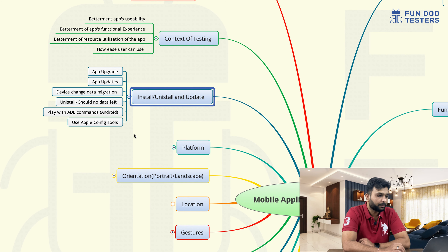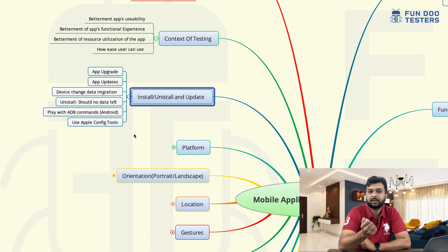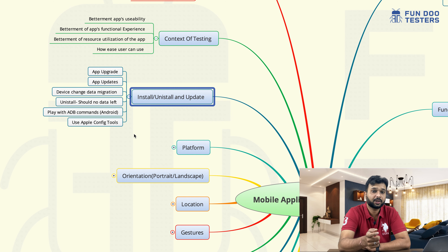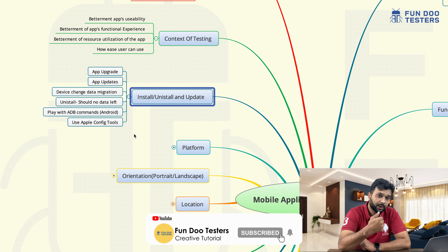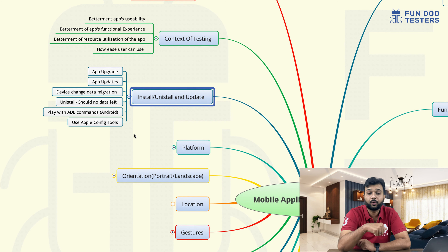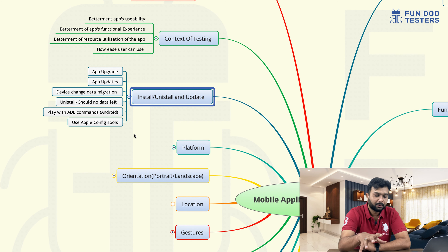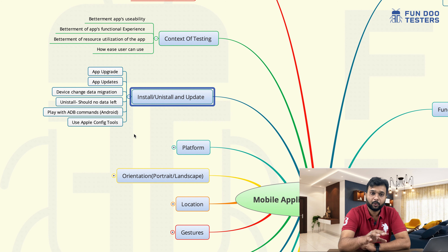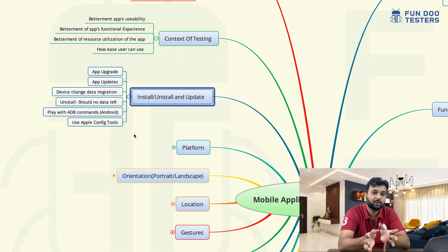Install, uninstall, and update. Let's say, usually we will get an application update. If we are an Android user, then we can update from the Play Store. If we are an iOS user, we can update from the App Store. Here, we have to check if we are going to update the application, are we going to lose data or not. If I am going to uninstall the application, should any data be left, or is it asking me to backup? If I am logged into the application, am I able to log out or do I have to delete my account? There are multiple scenarios related to install, uninstall, and update.